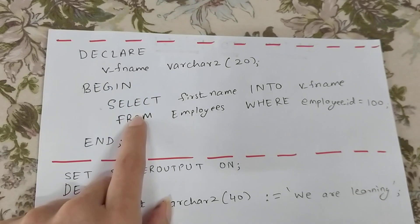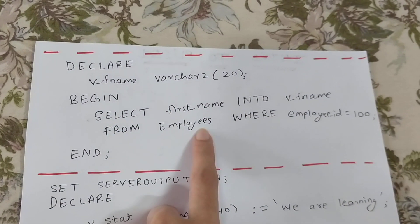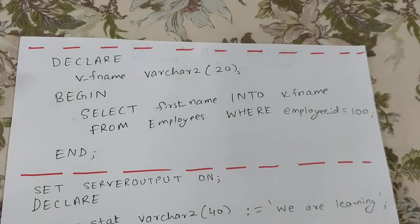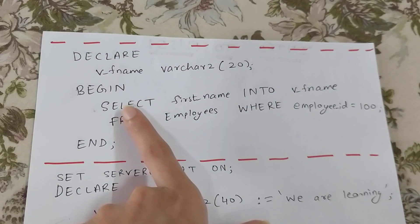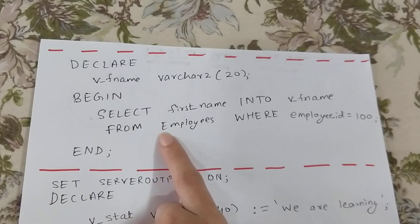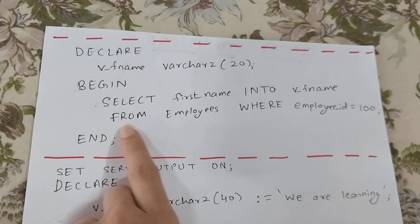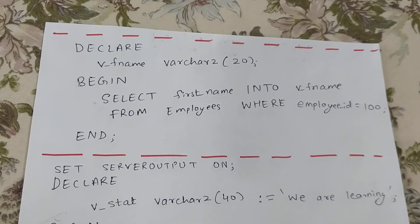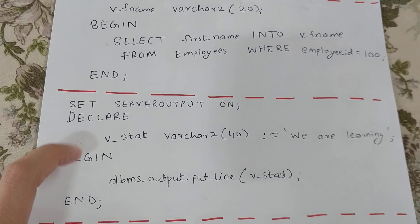Between BEGIN and END we write: SELECT first_name INTO v_fname FROM employees WHERE employee_id = 100. As mentioned, we select into a variable rather than a plain SELECT FROM. This selects the first name from the employees table where employee_id is 100 and stores it in v_fname. To print the value, we write: DBMS_OUTPUT.PUT_LINE(v_fname).